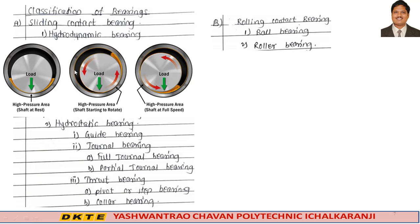The first figure shows the principle of working of a hydrodynamic journal bearing. Initially, when the shaft (journal) is at rest, it makes contact with the bearing at its bottom under the action of load. At the rest condition, the surfaces of the shaft (journal) and the bearing touch each other. When the shaft or journal starts to rotate in the clockwise direction, it climbs over the bearing surface.